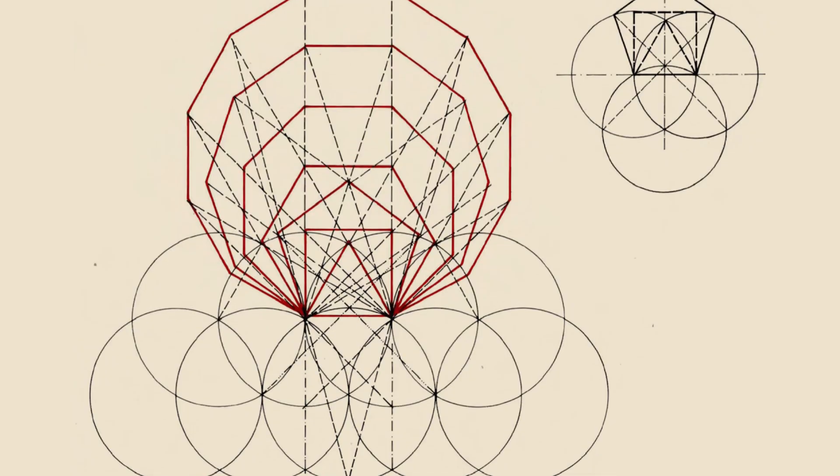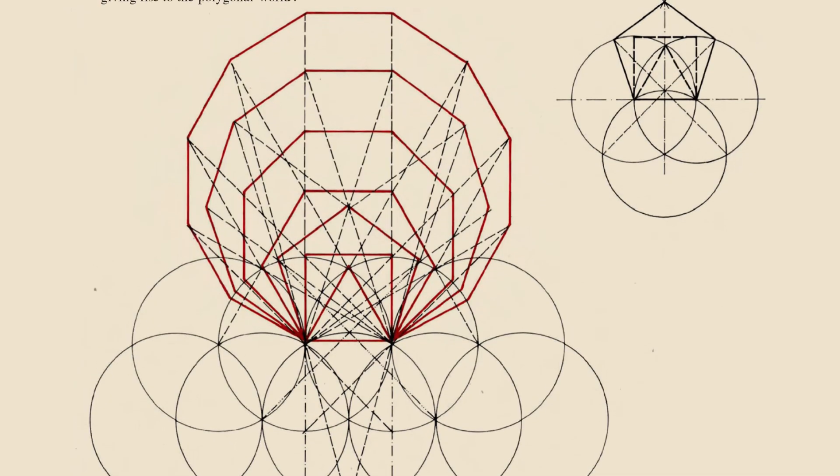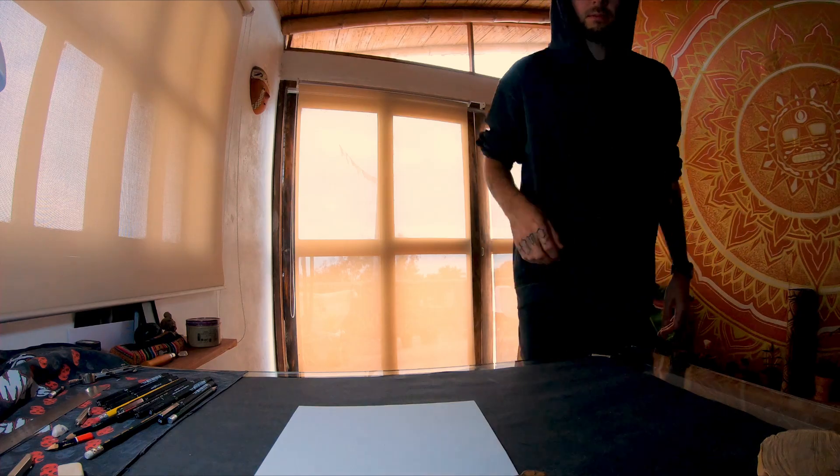Alright dudes, I was flicking through a book the other day by Robert Lawler and I found this image. It shows how the flower of life can be used to find a bunch of equilateral shapes and I wanted to see if I could draw it.